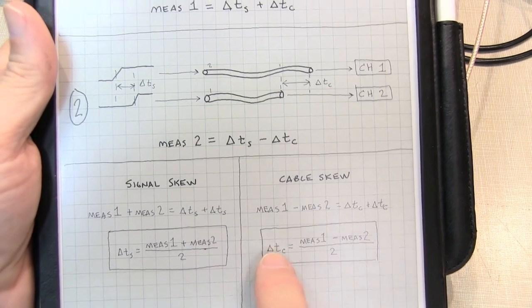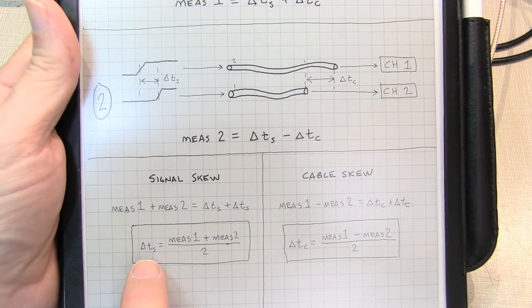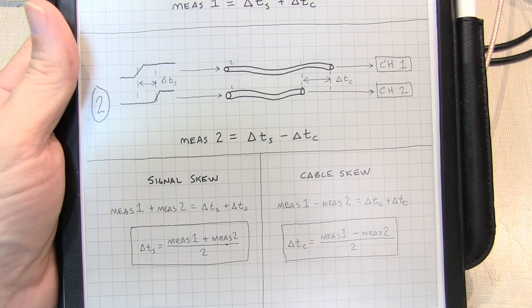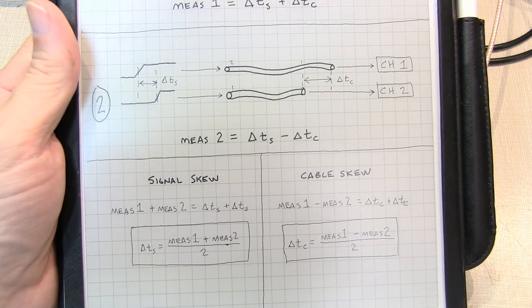So by simply making these two measurements with the cables swapped, we can easily separate out our original signal skew from our cable skew. Let's go take a look at it in action.